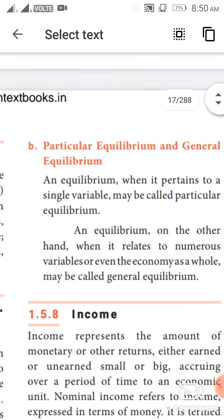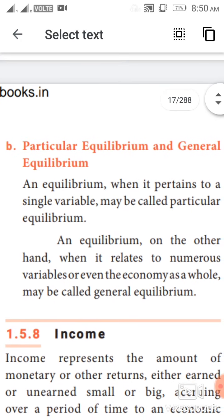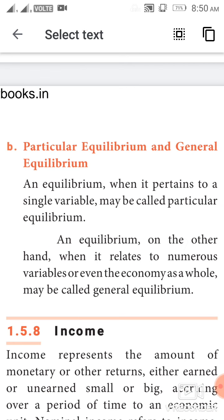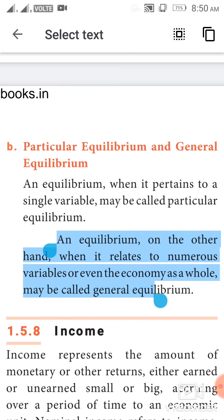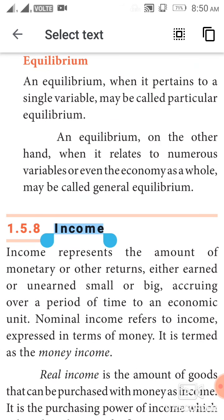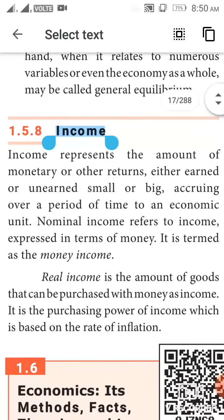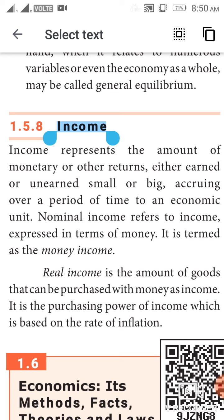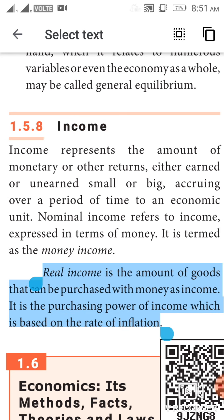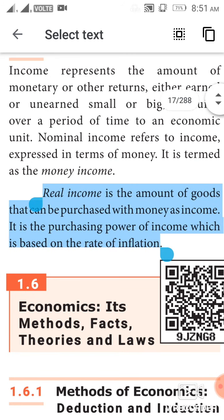Particular equilibrium and general equilibrium: an equilibrium when it pertains to a single variable may be called particular equilibrium. An equilibrium when it relates to numerous variables or even the economy as a whole may be called general equilibrium. Income: income represents the amount of monetary or other returns, either earned or unearned, occurring over a period of time to an economic unit. Nominal income refers to income expressed in terms of money. Real income is the amount of goods that can be purchased with money income — it is the purchasing power of income, based on the rate of inflation.